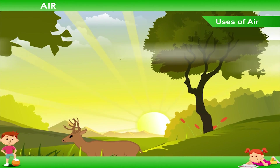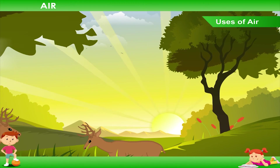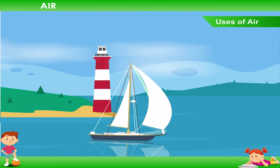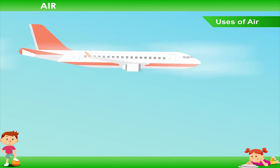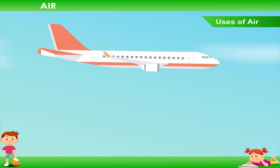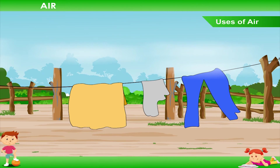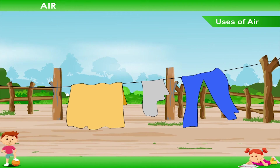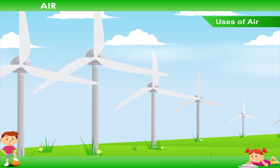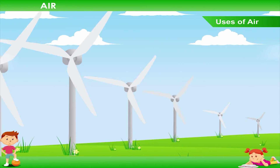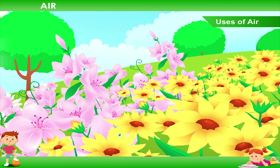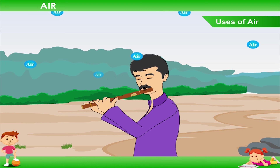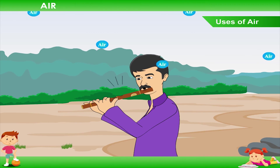Uses of air: moving air has many uses. Yachts sail on the water with the help of wind. Air gives a push to aeroplanes which helps them in flying. Wet clothes dry faster when the air moves fast and is dry. Air moves the blades of a windmill and produces electricity. The seeds of some plants are carried to faraway places with the help of wind. We also blow air into many musical instruments such as a flute and a mouth organ.